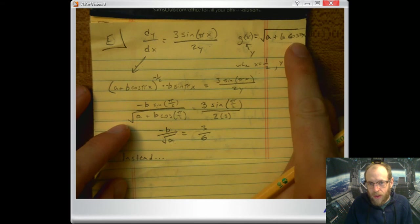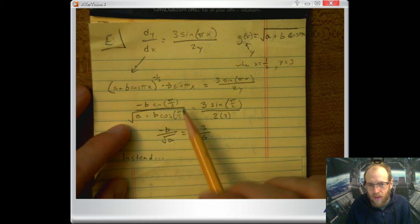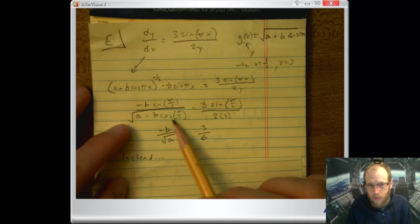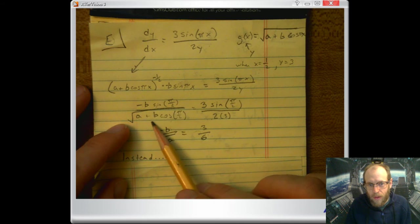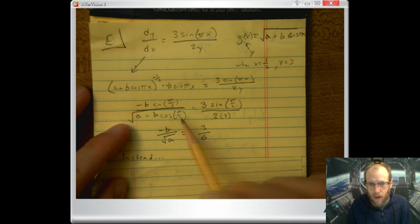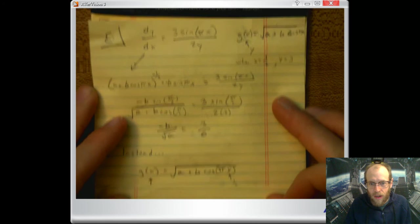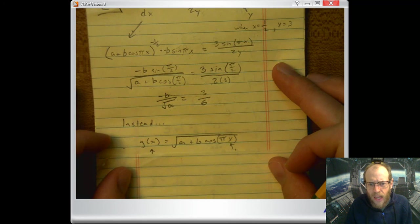Look at this equation right here. So I noticed as I was doing this that the cosine part, b times cosine, this all gives me 0 because cosine of π over 2 is 0.